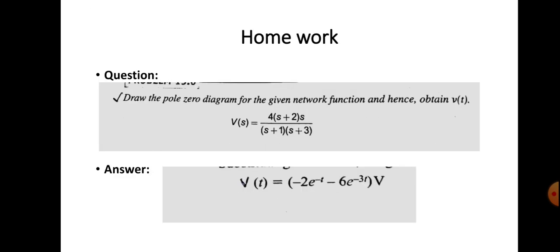Homework: Draw the pole-zero diagram for the given network function and hence obtain v(t), where V(s) = 4·(s+2)·s / [(s+1)(s+3)]. Here H = 4, zeros are at s = 0 and s = -2, poles are at s = -1 and s = -3. Find the distances and angles m01, m03, φ01, φ03, etc. The answer is v(t) = -2·e^(-t) - 6·e^(-3t). Try this homework and ask if you have any doubts.